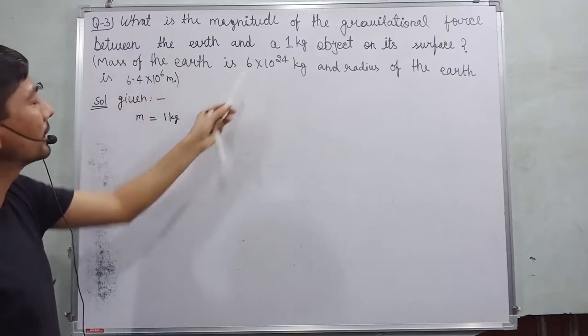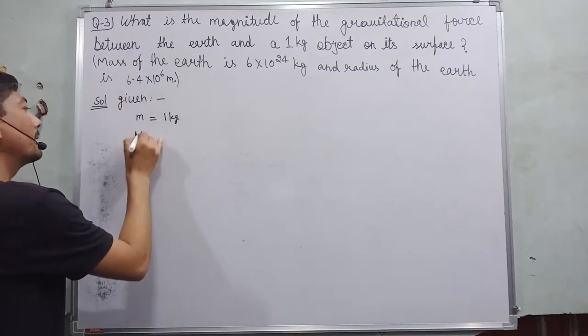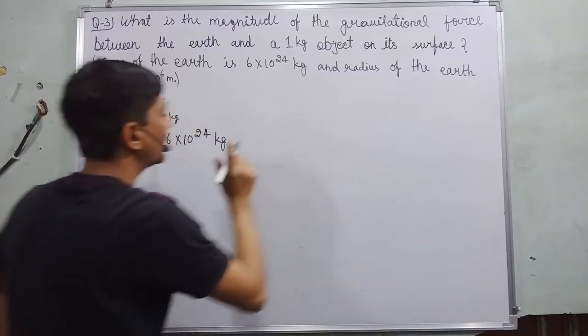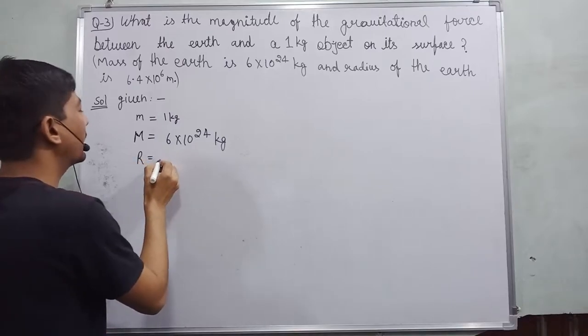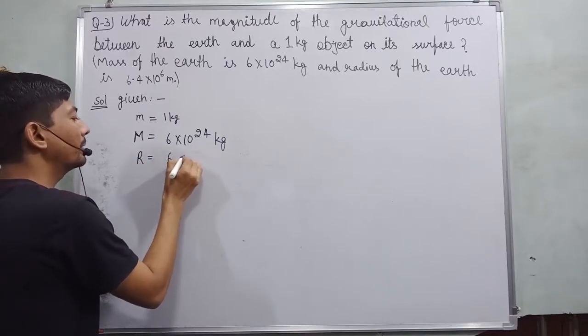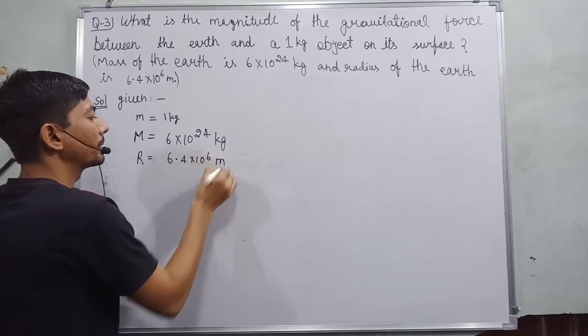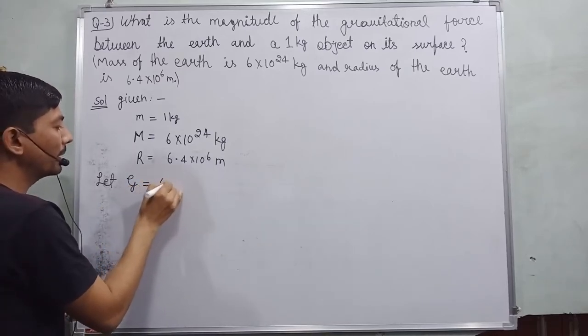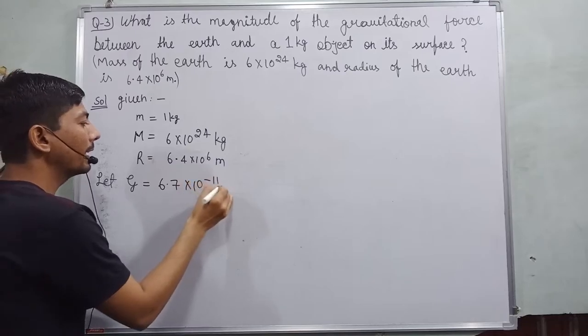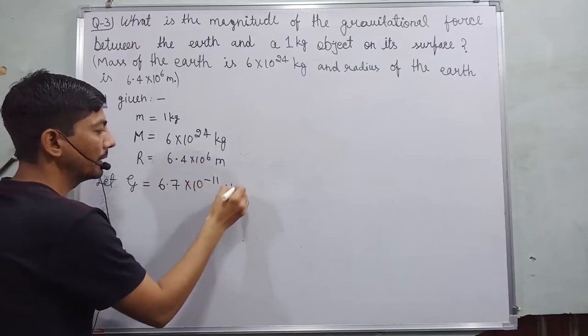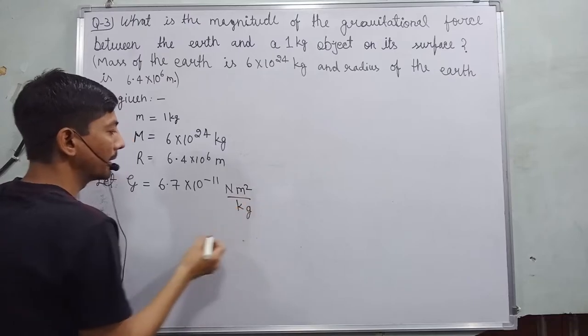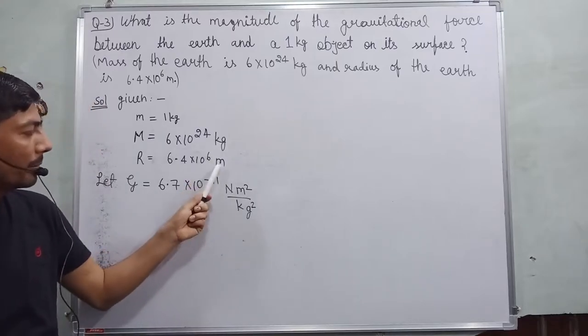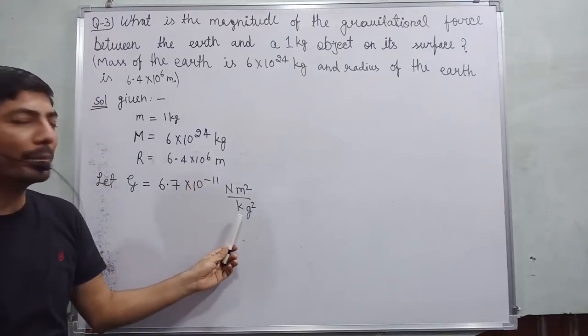And here is mass of the earth. Mass of the earth is represented by capital M which is equal to 6 × 10²⁴ kg. This is the radius of the earth. Radius of the earth is represented by capital R which is given 6.4 × 10⁶ meter. Let capital G. Capital G is the universal gravitation constant, which is equal to 6.7 × 10⁻¹¹ newton meter square per kg square.